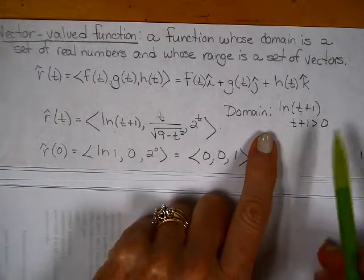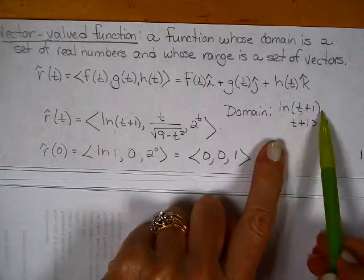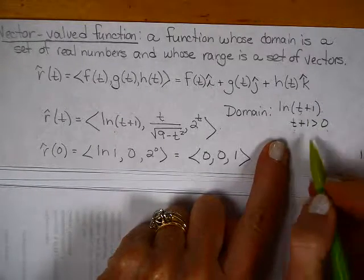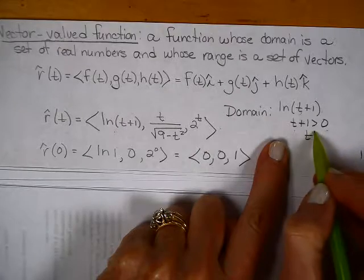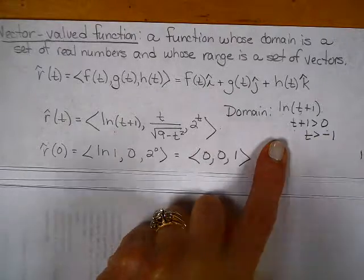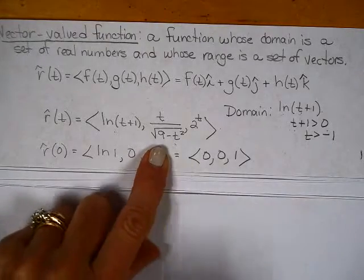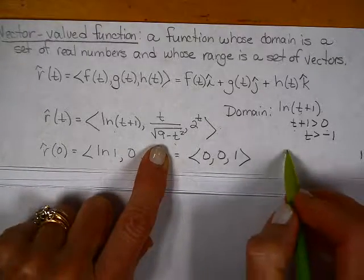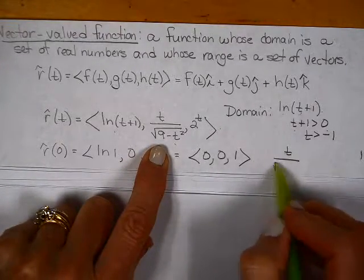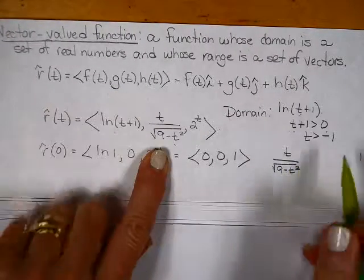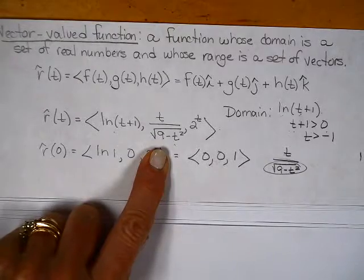Alright, we're looking at the domain of this. For the natural log of t plus 1, I said that t plus 1 had to be greater than 0, which means that for this piece of the function, t has got to be greater than negative 1. Then I've got to look at the next piece, look at this part. If you have t over the square root of 9 minus t squared, the part you're concerned with is your denominator.